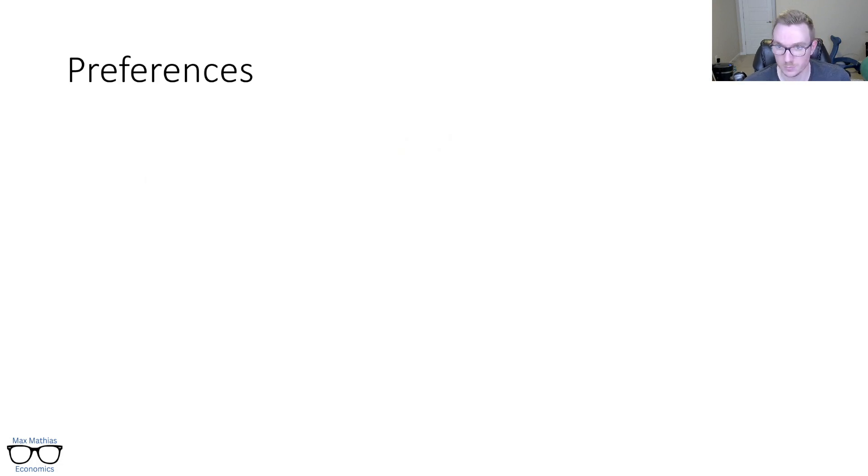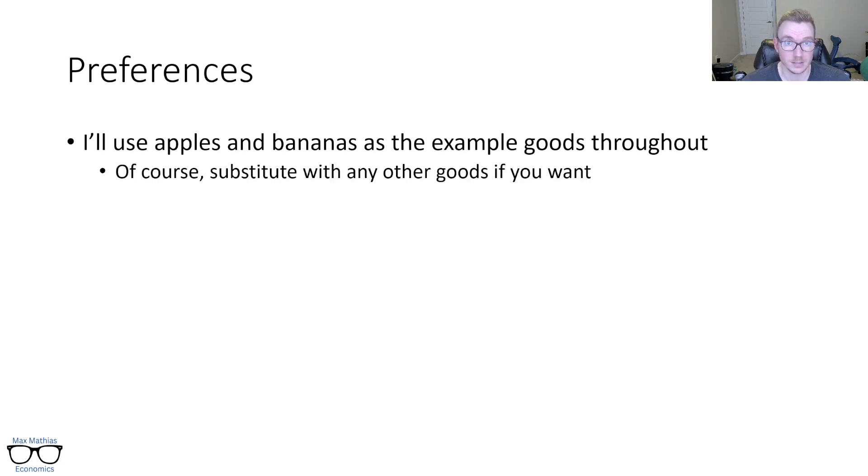So with this, we have preferences. I'll use apples and bananas as the example goods throughout just to be concrete as possible, but substitute with any other goods if you want. You don't like apples and bananas or you want to choose different A and B starting things. That's totally fine. I have no preferences. When I do this in class, I use good one and good two. That's a little bit vague. I'll do apples and bananas here. But again, you're your own person. Choose different goods if you want to.